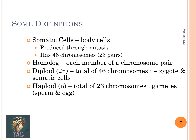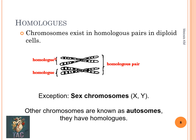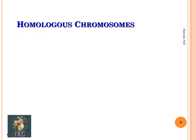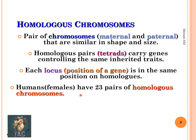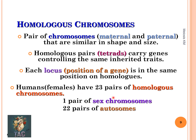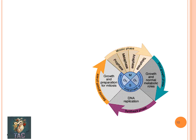Chromosomes exist in homologous pairs in diploid cells. The exception is the sex chromosomes in males, which are X and Y. Other chromosomes are known as autosomes. Homologous chromosomes are pairs — both maternal and paternal — that are similar in shape and size. Homologous pairs (tetrads) carry genes controlling the same inherited traits. Locus is the position of a gene; it is in the same position on both homologous chromosomes. Human females have 23 pairs of homologous chromosomes: two X chromosomes and 22 pairs of autosomes.